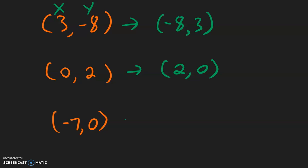And for negative 7, 0, the inverse will be 0, negative 7. Now the only thing we did was switch the x and the y. We didn't change any positives to negatives or negatives to positives.